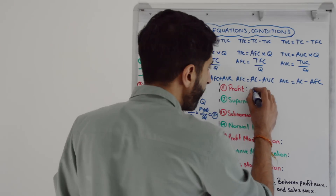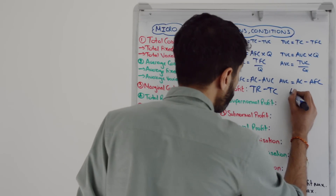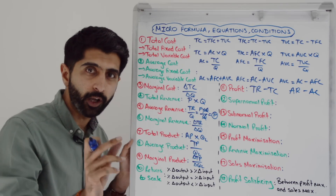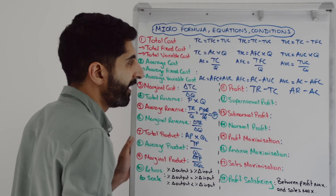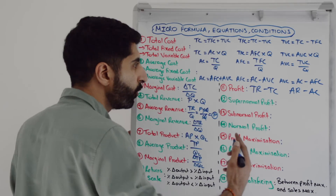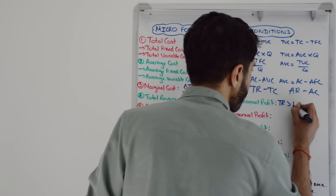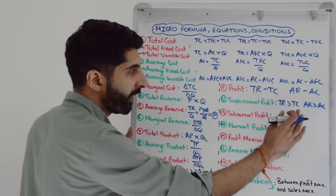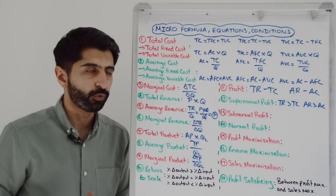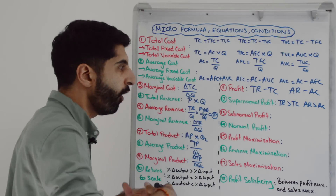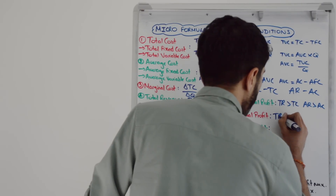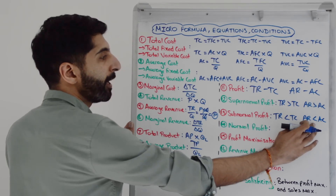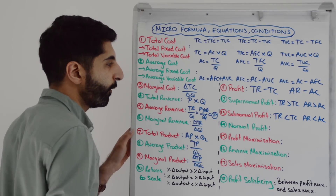Go to profit now. Profit is total revenue minus total cost, but also it's average revenue minus average cost — that will give you profit per unit because we're working with averages. Very useful when we consider the next conditions. Supernormal profit or abnormal profit is when TR is greater than TC, or when AR is greater than AC — that will be supernormal profit per unit. Multiply that by quantity to get total supernormal profit. Subnormal profit or a loss is when total revenue is less than total cost, or when average revenue is less than average cost — a loss per unit multiplied by Q to get the total loss.